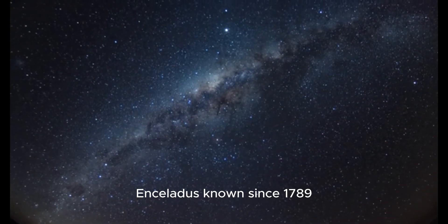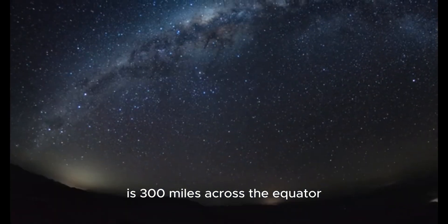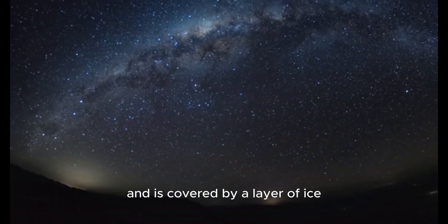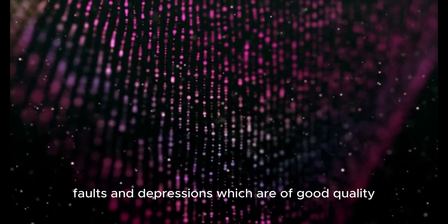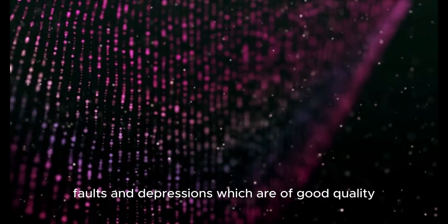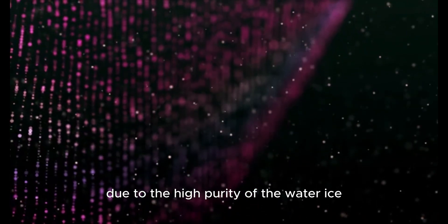Enceladus, known since 1789, is 300 miles across the equator and is covered by a layer of ice. This outer surface is decorated with many pits, faults, and depressions, which are of high quality due to the purity of the water ice.